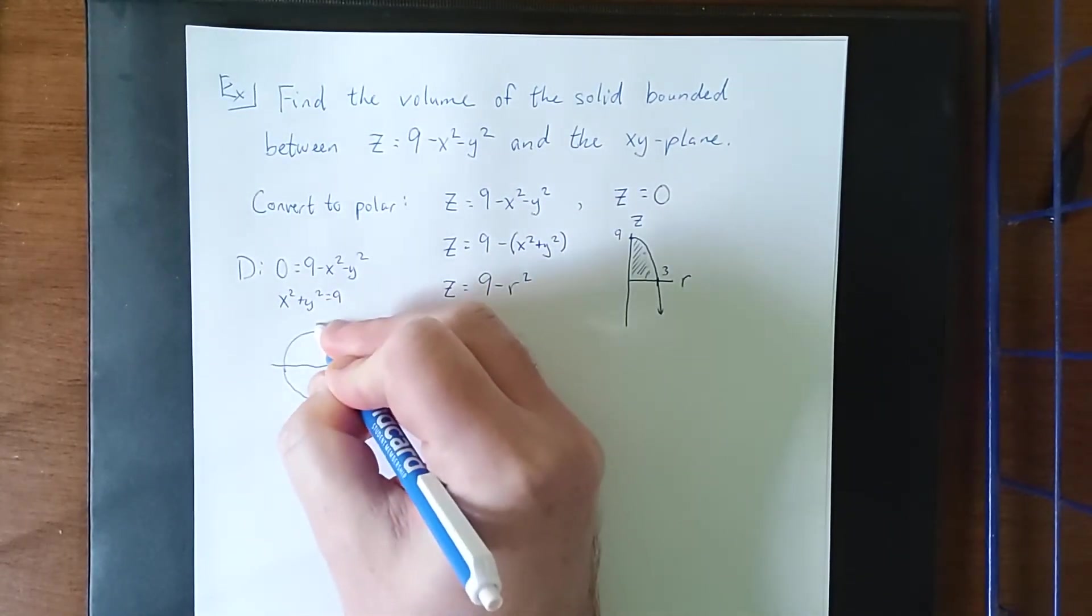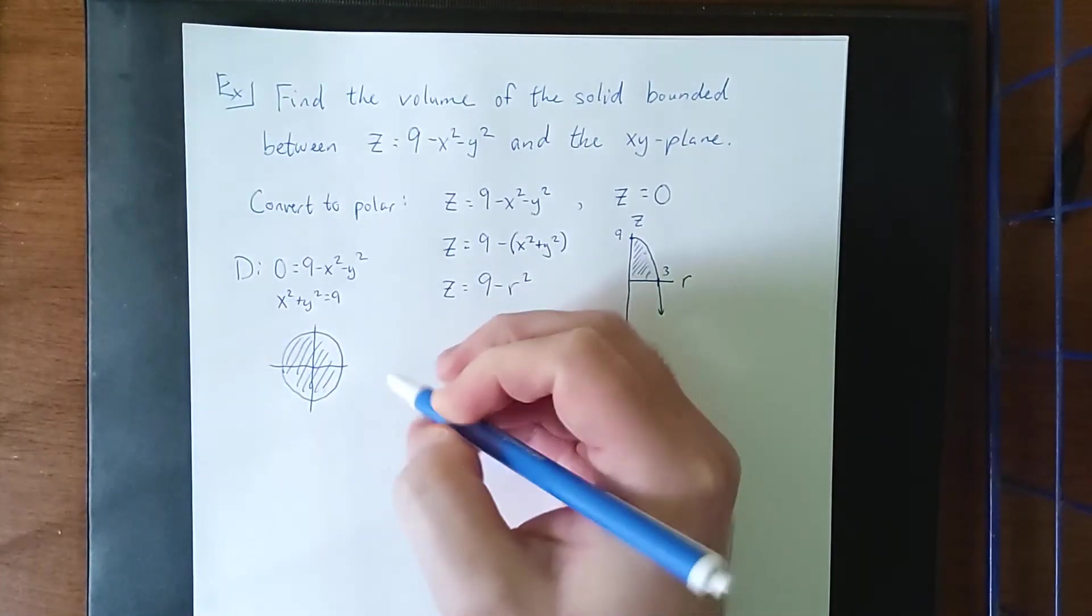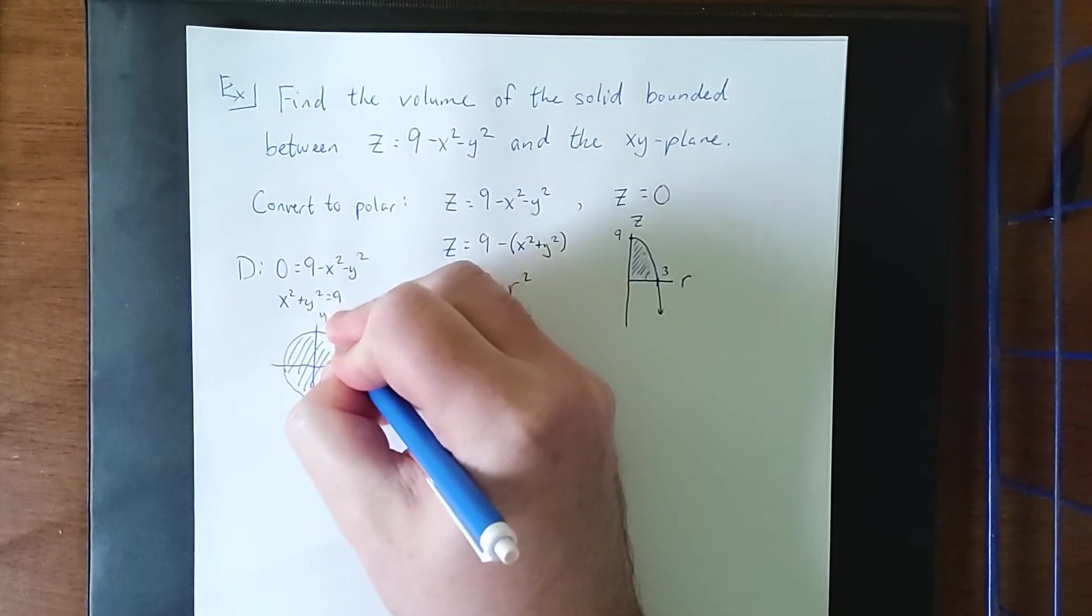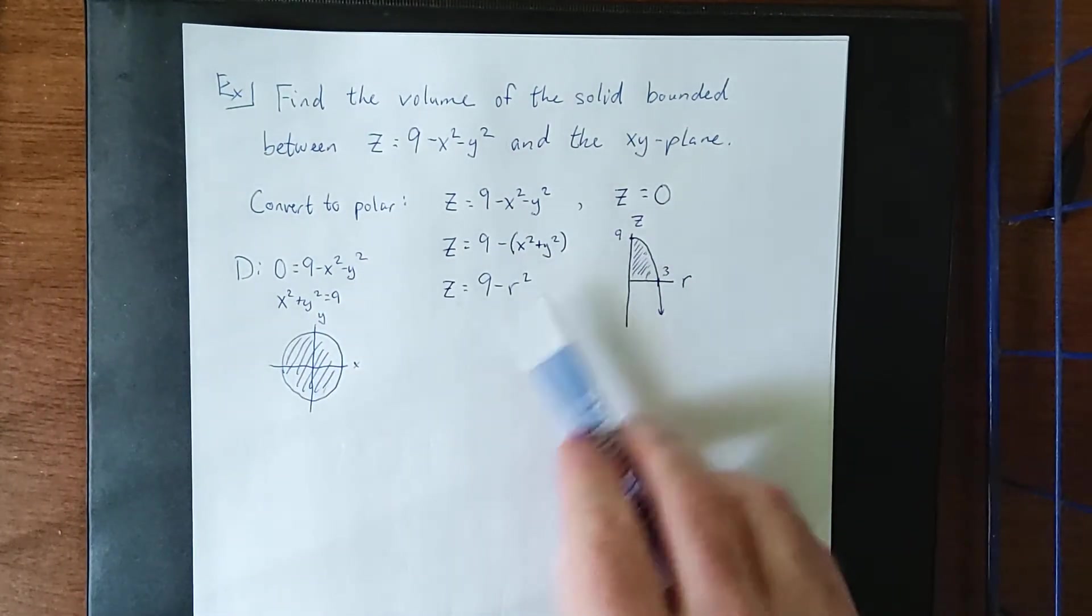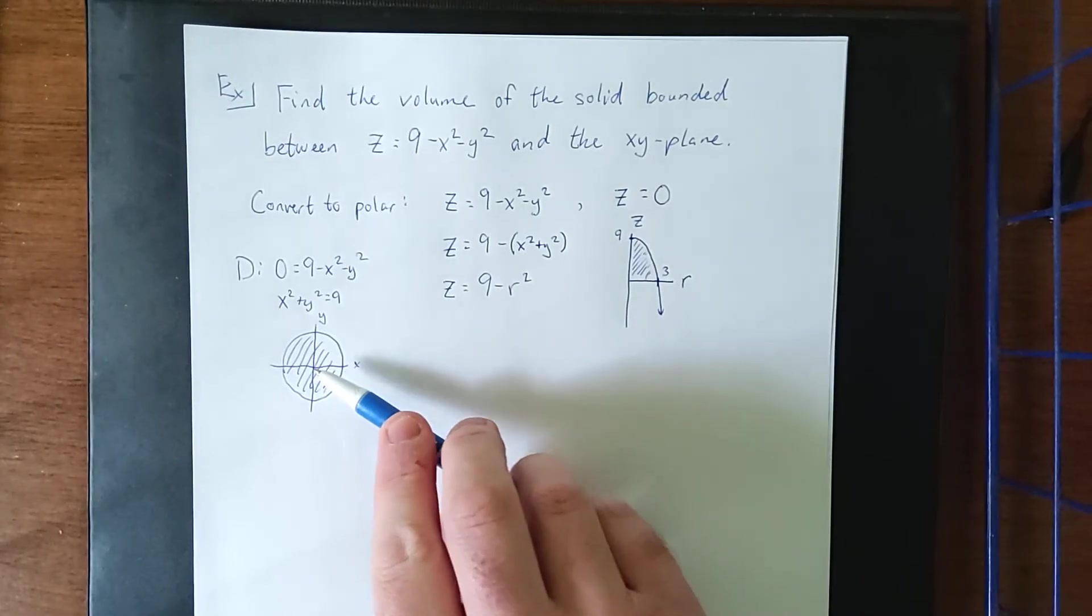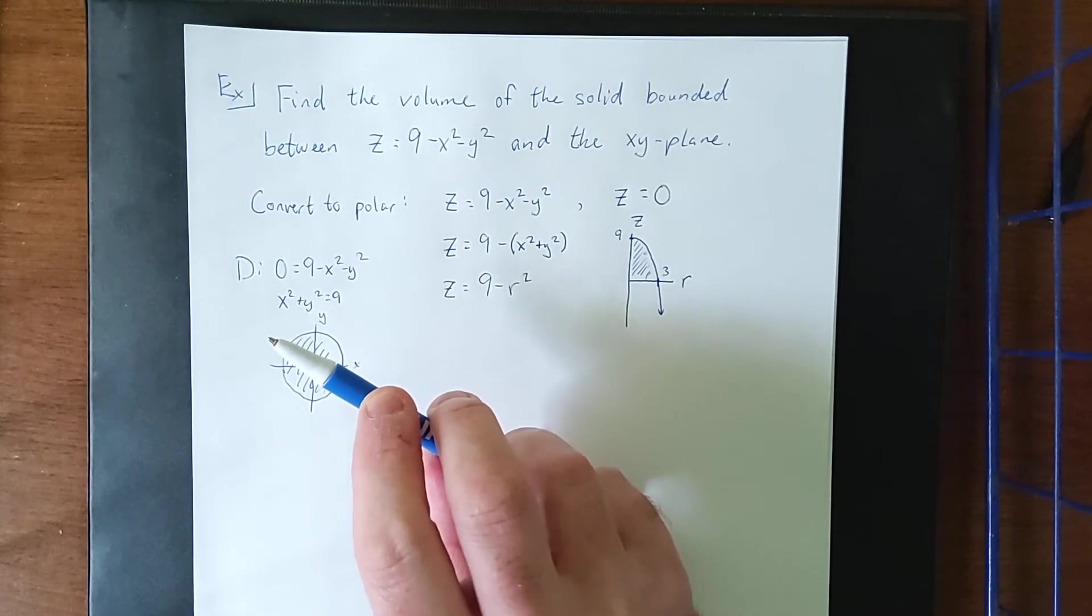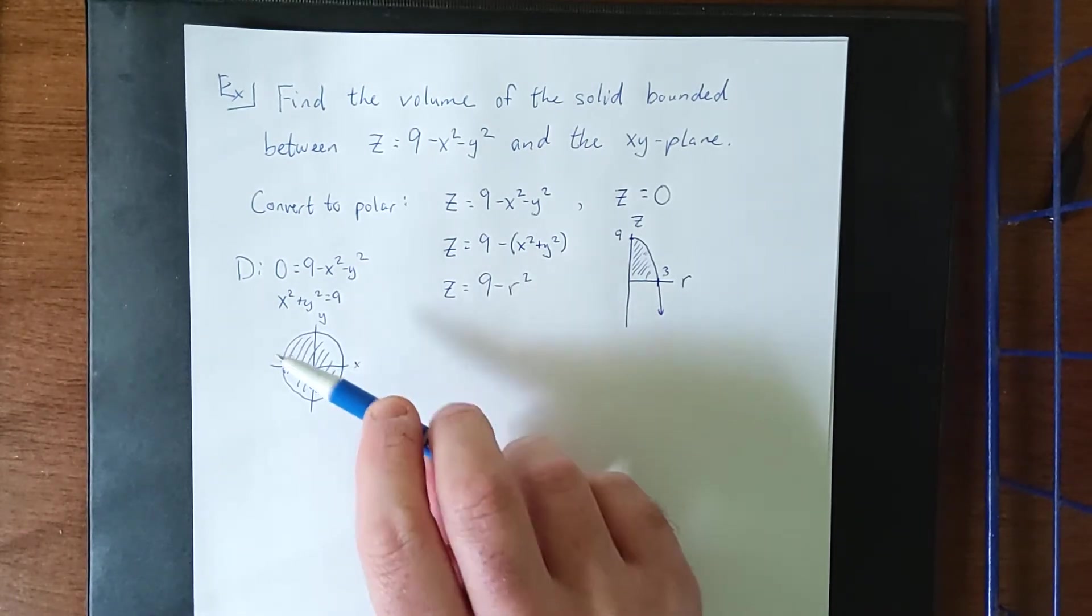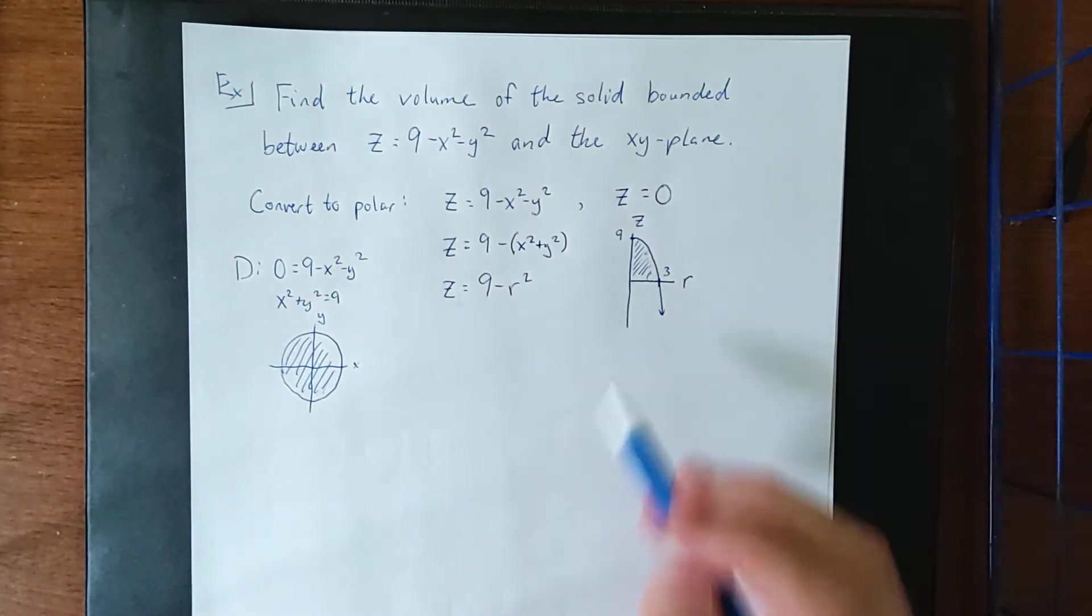So within the xy plane we would be talking about a circular region. So essentially if we take this and consider this to be the portion that's coming out of the paper toward you in the z axis, then we'd have the vertex somewhere up here and then the paraboloid opening in the downward direction toward the xy plane in all directions.